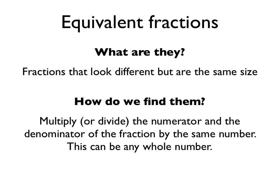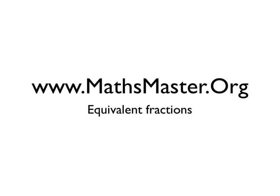To summarise: equivalent fractions are fractions that look different but are actually the same size — they describe the same size. To find them, we multiply or divide the numerator and the denominator of the fraction by the same whole number. That was how to find equivalent fractions. If you want to see more videos, please visit mathsmaster.org.